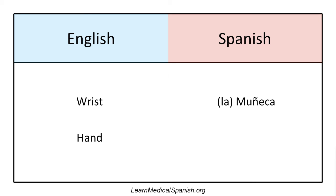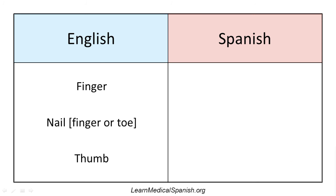How about the hand? La mano. So if you just look at the word mano, you might assume it's masculine, but it is in fact feminine — it's one of those rare exceptions where it ends in an O but it's a feminine word. So you say la mano instead of el mano. Finger: el dedo.